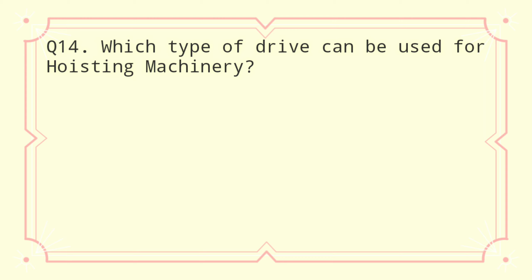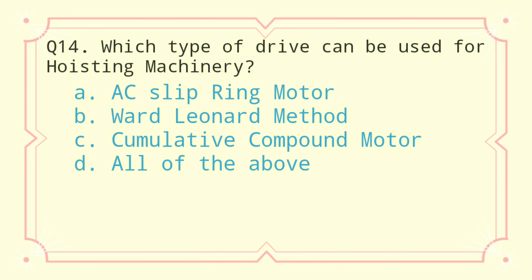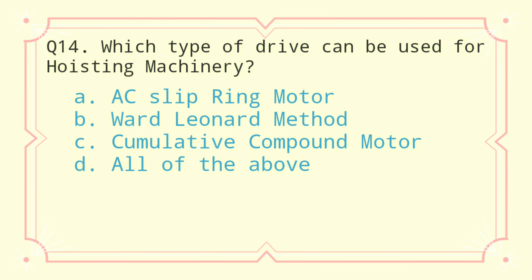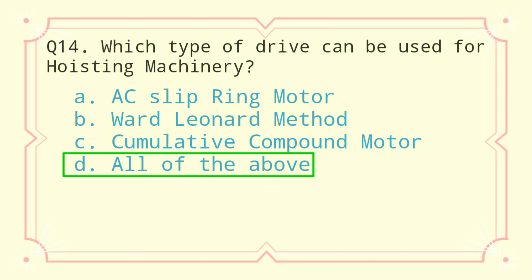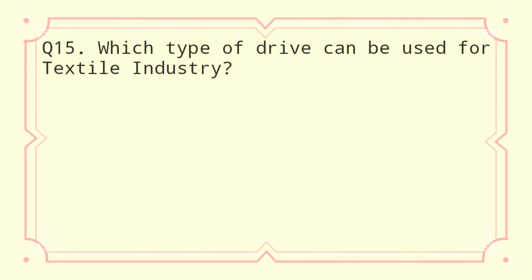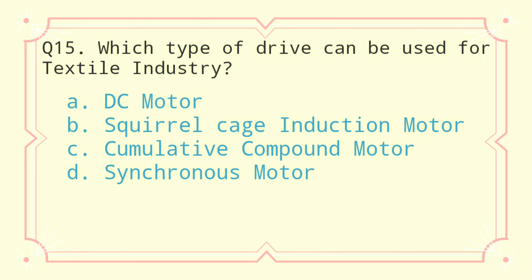Question 14: Which type of drive can be used for hoisting machinery? a) AC slip ring motor, b) Ward Leonard method, c) cumulative compound motor, d) double squirrel cage induction motor. The correct answer is all of the above.